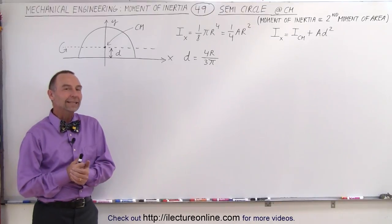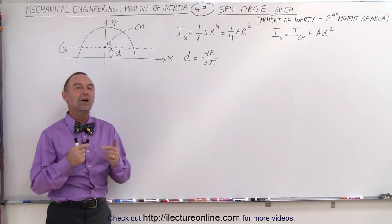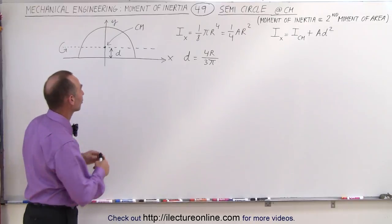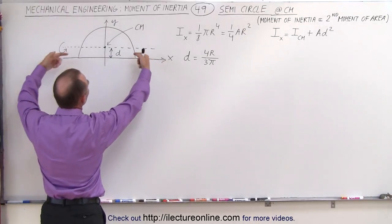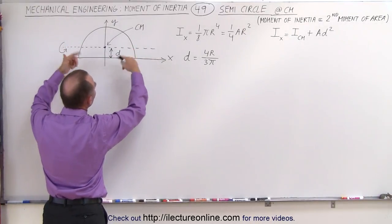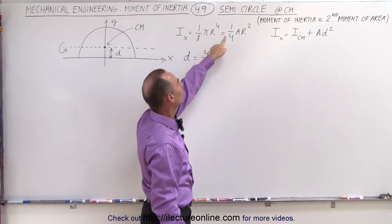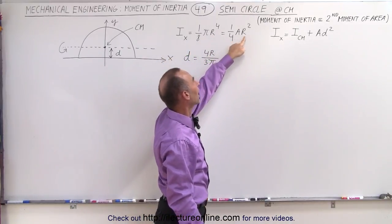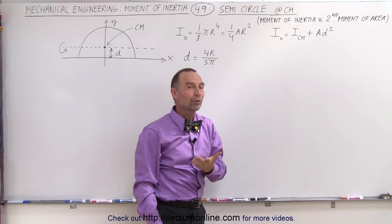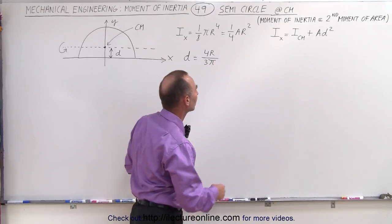Welcome to our lecture online. In the previous video, we saw that the moment of inertia of a semicircle relative to the x-axis, as if you were to spin it around the x-axis, was equal to 1/8 pi r to the 4th, or 1 quarter the area times r squared, the area of course being 1 half pi r squared.